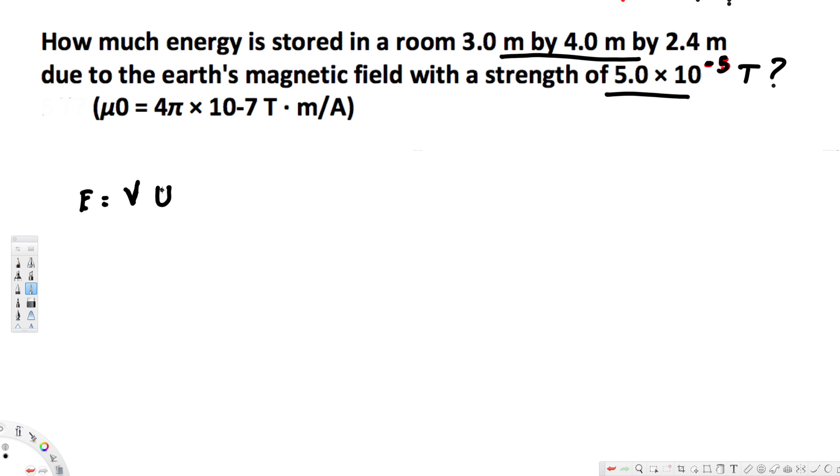U, this is magnetic energy density. We have to find this one using this formula. U is equal to 0.5 divided by mu naught times B squared. So, this is the formula to find the magnetic energy density.